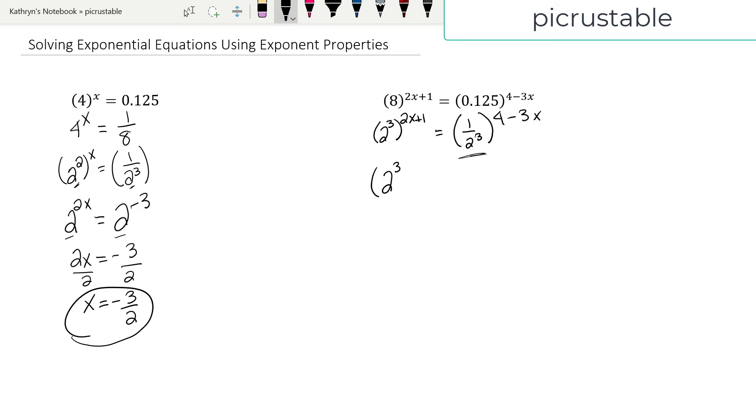I'm going to have 2 to the third to the 2x plus 1 equals... Now, I have it in the denominator. How am I going to do it? I'm just going to do the reciprocal. I'm going to say 2 to the negative 3, all to the 4 minus 3x.